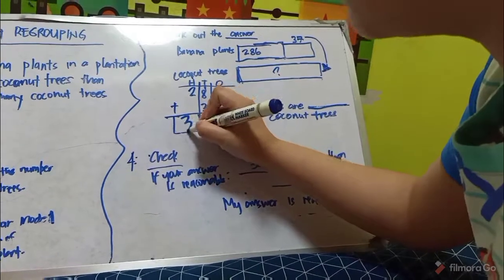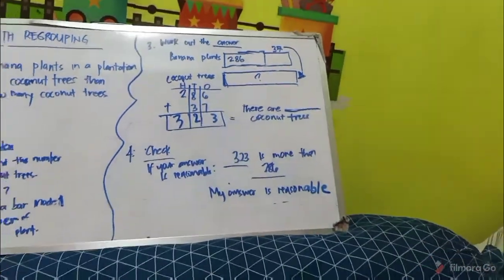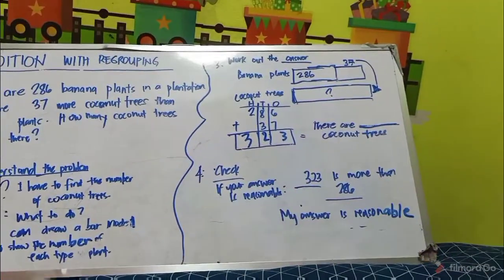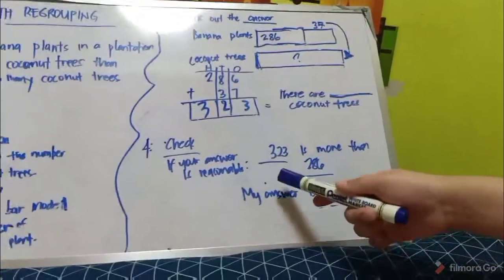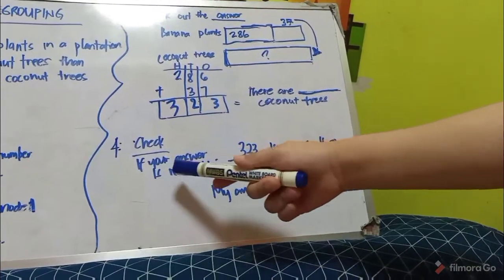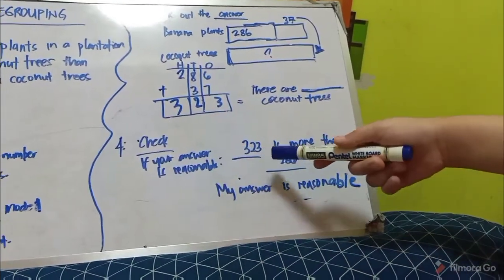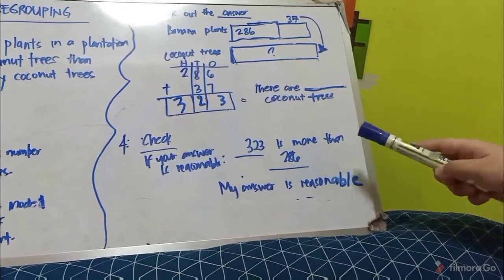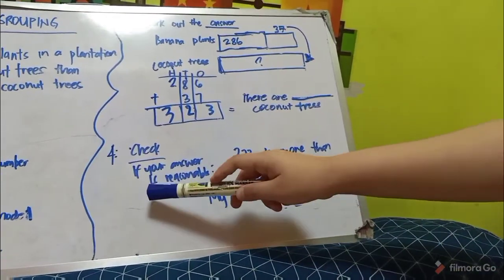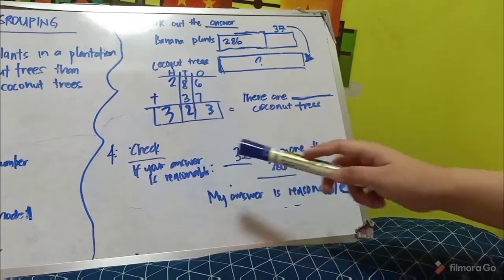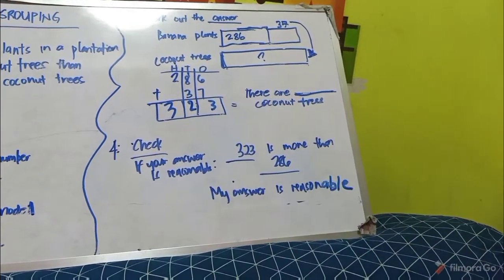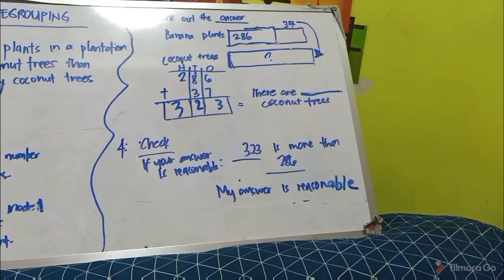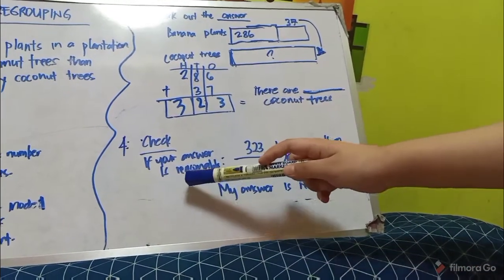So the answer is 223. Step 4, check: if your answer of 223 is more than 286, that means it's reasonable.